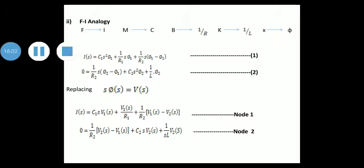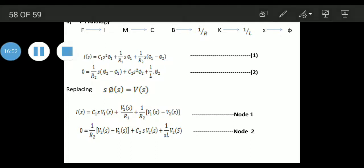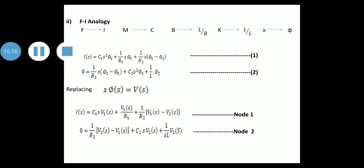For FI analogy, F → I, M → C, B → 1/R, K → 1/L. Writing the equations: I(S) = C1 S² φ1 + (1/R1) S φ1 + (1/R2) S(φ1 − φ2) is equation 1. Equation 2: 0 = (1/R2) S(φ2 − φ1) + C2 S² φ2 + (1/L) φ2. Replacing S·φ(S) = V(S), node 1 becomes: I(S) = C1 S V1 + V1/R1 + (1/R2)(V1 − V2). Node 2: 0 = (1/R2)(V2 − V1) + C2 S V2 + (1/SL) V2.